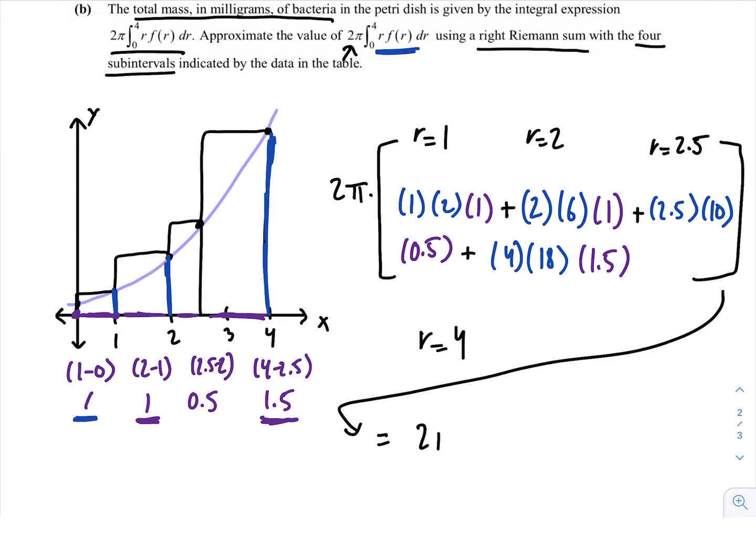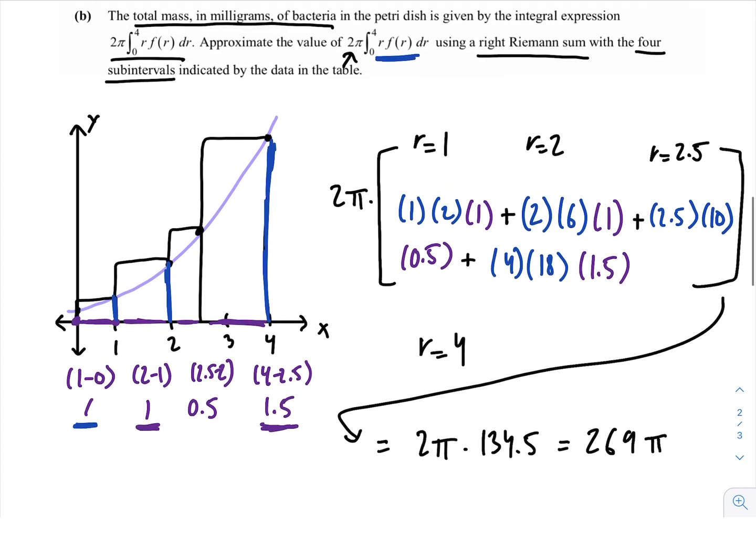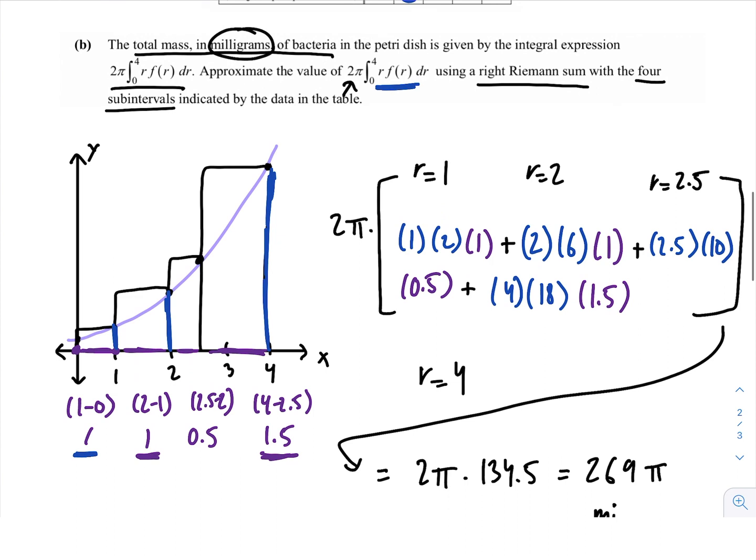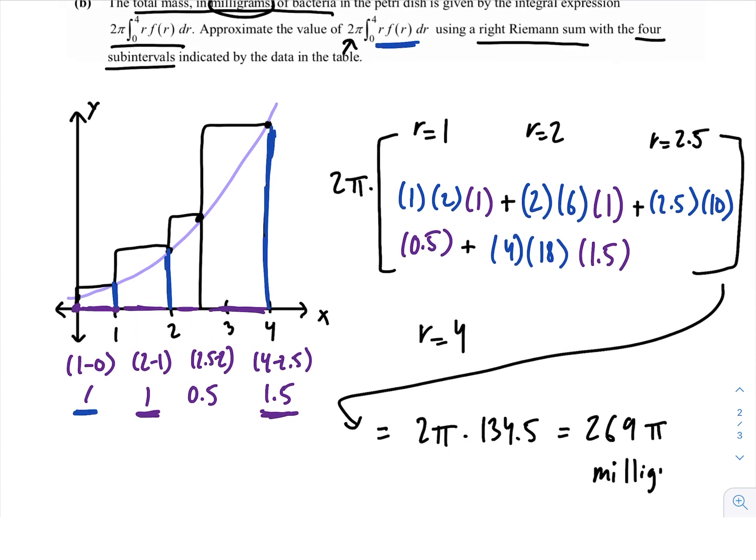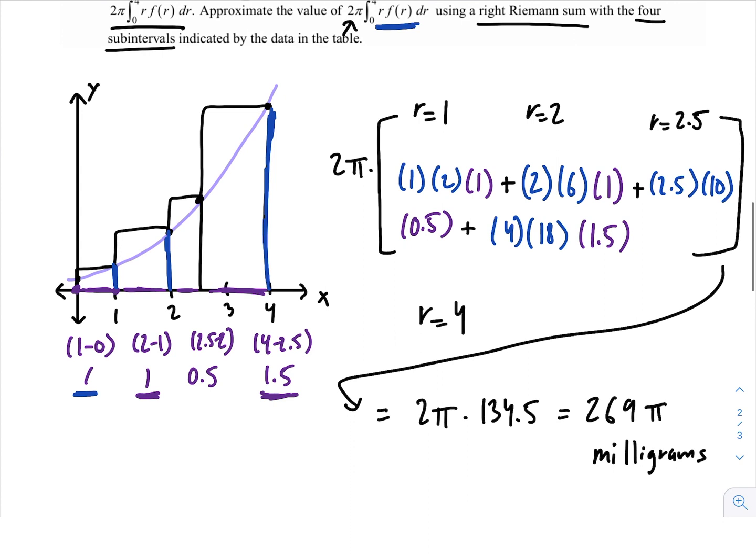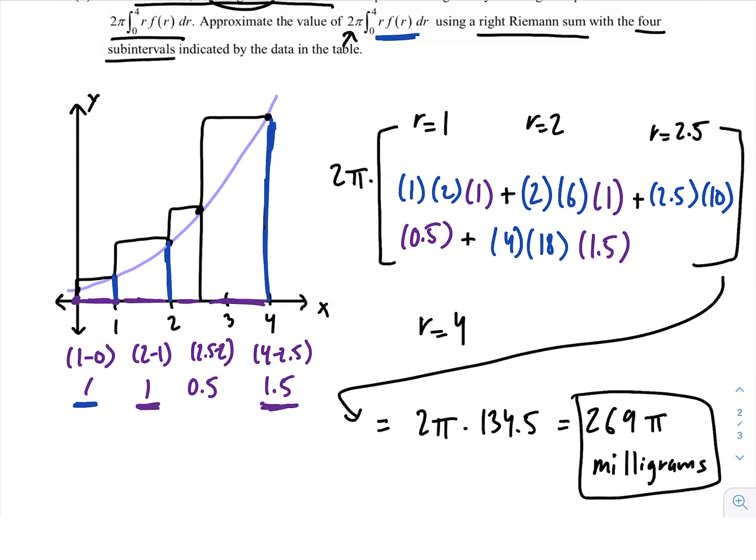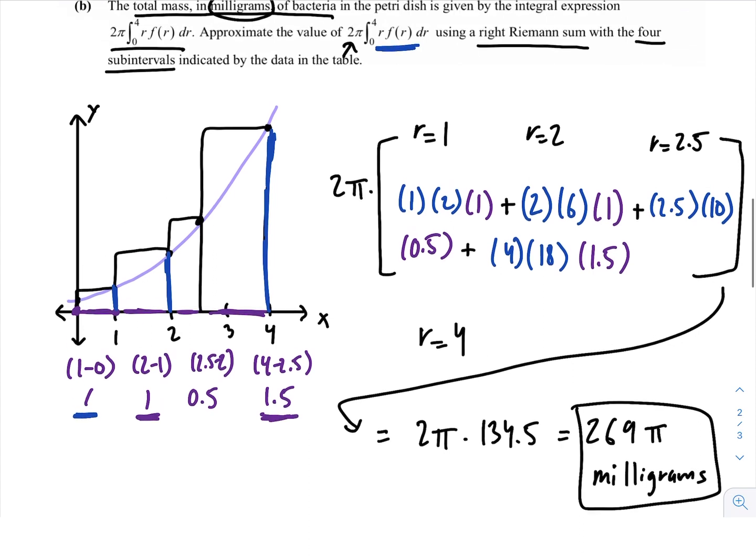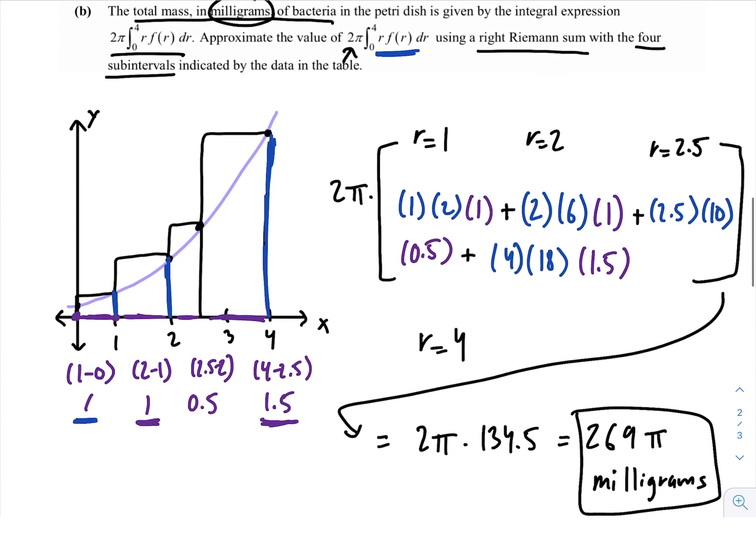And if we do all that math, we get 2π times 134.5, which is equal to 269π. And let's always add our units, which it's mass in milligrams. So, we say it is 269π milligrams, and you can multiply by π. I don't really do it. You don't need to, but if you do multiply by π, and you get the approximate number, you want to round it to the nearest three decimal points. And that's how you do problem B.